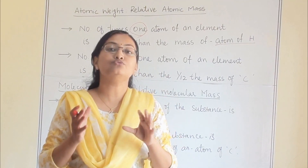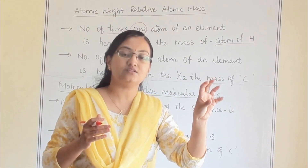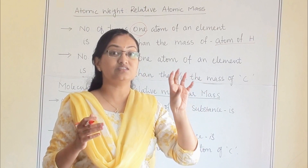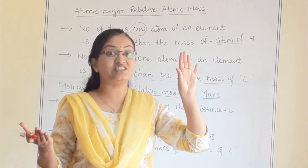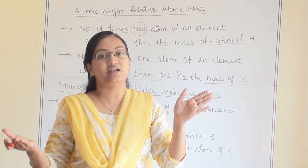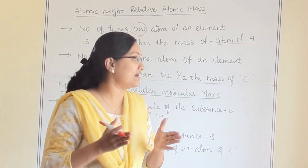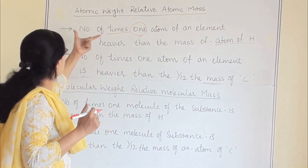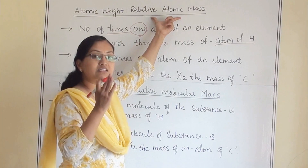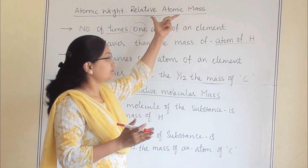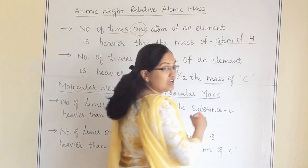Because atoms are very tiny, we need to set a reference. For example, one element's atom is five times heavier than one atom of hydrogen, or it is ten times heavier than one atom of hydrogen. So if you are comparing like that, you are saying that its relative atomic mass is this value — comparing against the hydrogen atom.